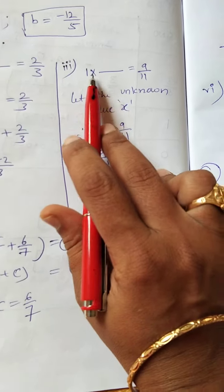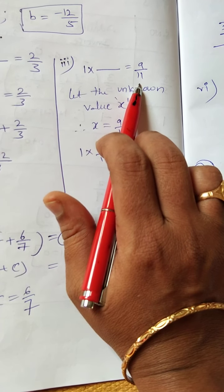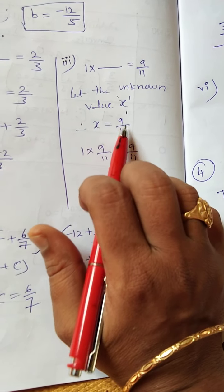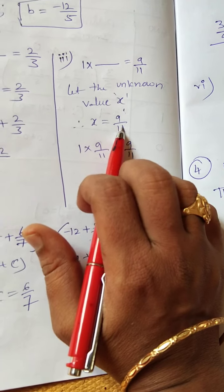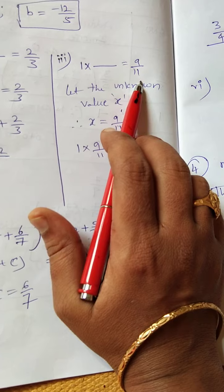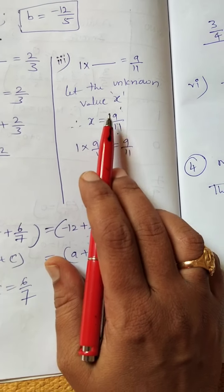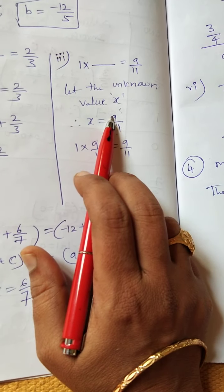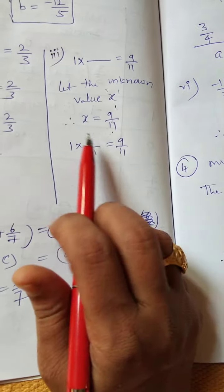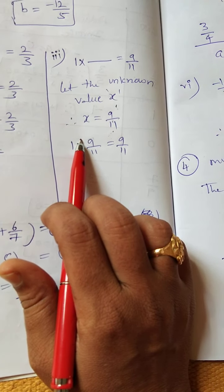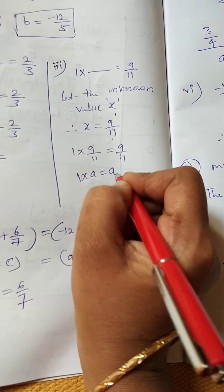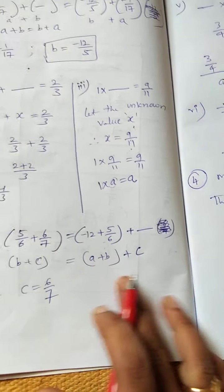Third part: 1 × dash = 9/11. Let the unknown value be X. When the given number is multiplied by 1, you get that number itself. The unknown value is 9/11, the answer itself, because we're doing multiplication. It's in the form 1 × A = A, so A is 9/11.